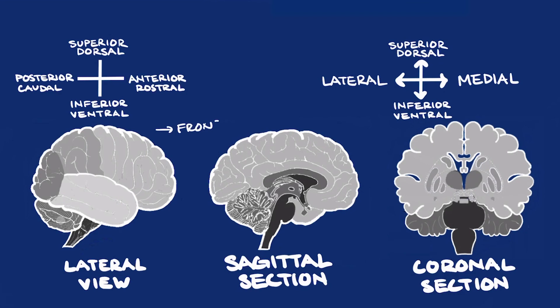The orientation of the brain is with the frontal lobe towards the front of your head and the occipital lobe towards the back. Neuroscience uses specific terminology to indicate directions. The top and bottom are the dorsal and ventral sides, and the front and back are called the rostral and caudal sides. Towards the sides is referred to as lateral, and towards the center is referred to as medial. So when you hear a section referred to as dorsolateral, that means towards the top and towards the side of the brain. We'll be looking at the brain from the side — a lateral view — and through cross sections: vertically along the midline, a sagittal section, as well as a vertical side-to-side cross section, a coronal section.